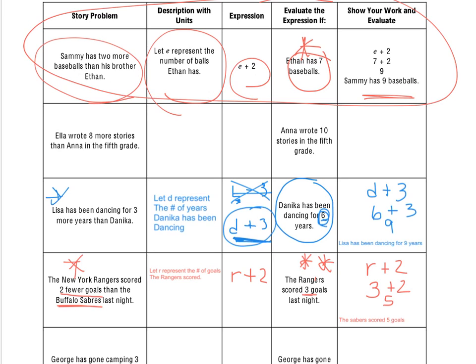Now, if we go back and take a look at the expressions real quick for this one. Based on the statement, the New York Rangers scored two fewer goals than the Buffalo Sabres last night. And had they have given us the Buffalo Sabres, we could have done B minus two to get the Rangers. So, there's always going to be two expressions for each of these statements. But when you go through to do the rest of these, I would look into column four. This column here, the Evaluate the Expression If, to help you out with your expression. Because you only have to write one expression, one description with units. But it's good to understand that there could be two of them, depending on which way you're looking at the statement.